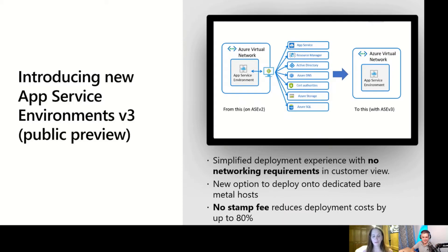ASE v2 and v1 were what we'll call slightly expensive. With ASE v3, we've made a number of changes to the system architecture so the system no longer costs as much as it did with v2 and v1, and that's allowed us to pass those savings on to customers. Customers used to pay what we call a stamp fee with ASE v2, and that stamp fee is gone in ASE v3. Your pricing now is basically whatever you're paying for your App Service plan, and if your ASE is completely empty you pay the fee as if you had one instance of the smallest App Service plan.